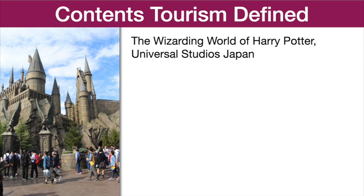Actually, there are various kinds of terms used to describe this kind of tourism. However, if we think of the example of Harry Potter fans visiting Universal Studios Japan, we begin to see the advantages of the Contents Tourism approach. We might think of this as film tourism, or film-induced tourism. After all, the appearance of the theme park is heavily based on the Harry Potter films.